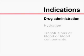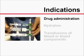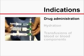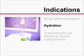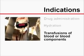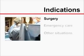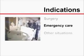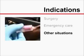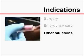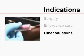Peripheral intravenous catheterization is required in a broad range of clinical applications, including intravenous drug administration, intravenous hydration, transfusions of blood or blood components, during surgery, during emergency care, and in other situations in which direct access to the bloodstream is needed.